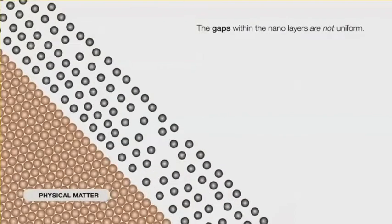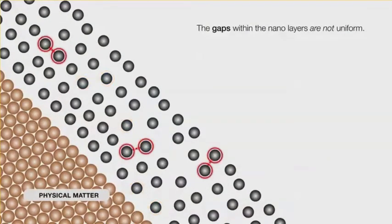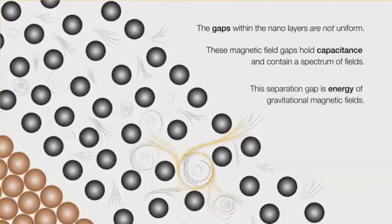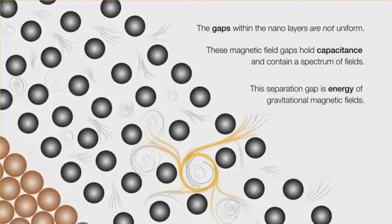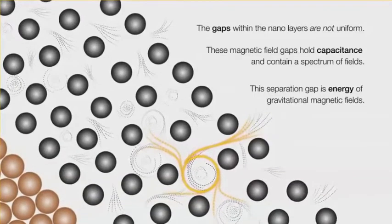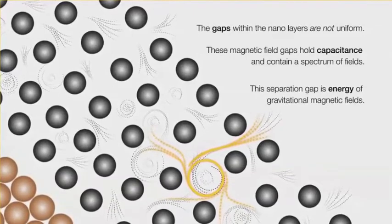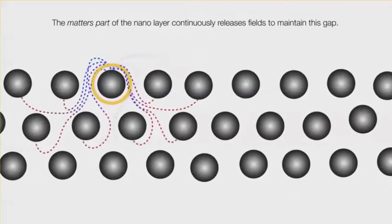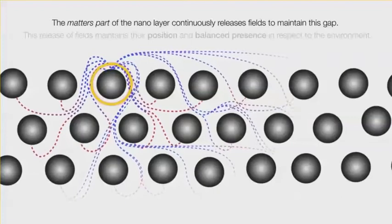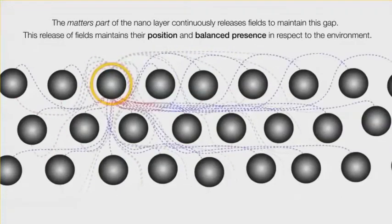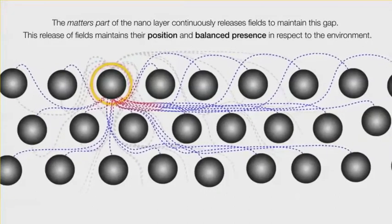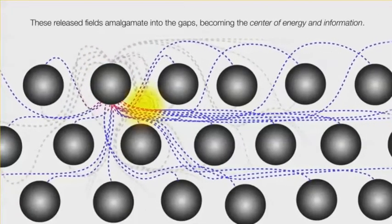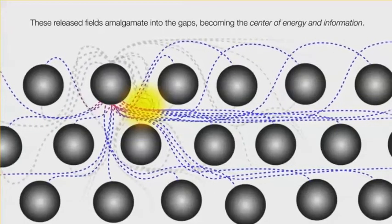The gaps within the nano-layers are not uniform. These magnetic field gaps hold capacitance and contain a spectrum of fields. This separation gap is energy of gravitational-magnetic fields. The matter's part of the nano-layer continuously releases fields to maintain this gap, and this release of fields maintains their position and balanced presence in respect to the environment. These released fields amalgamate into the gaps, becoming the centre of energy and information.